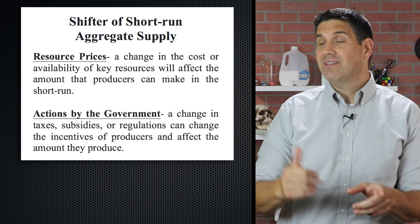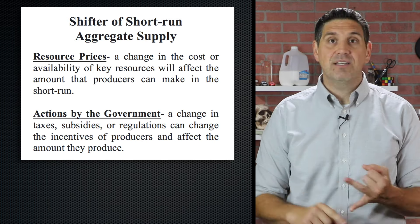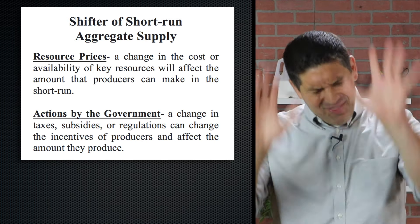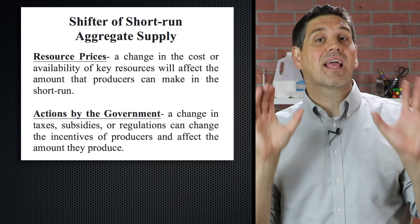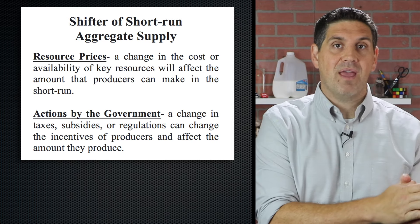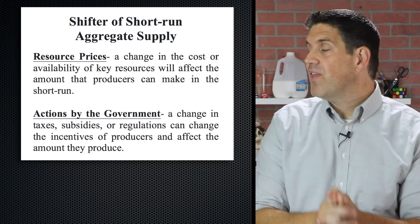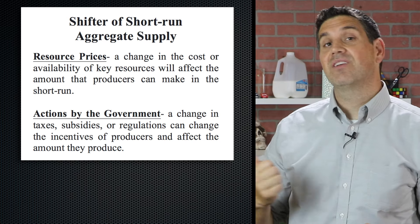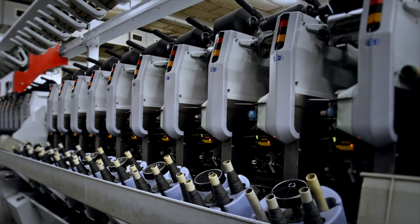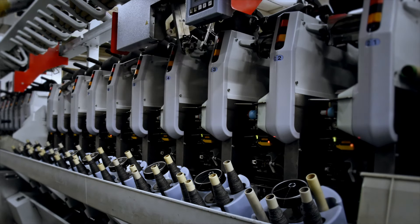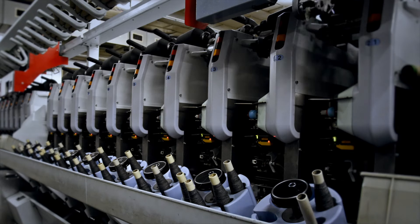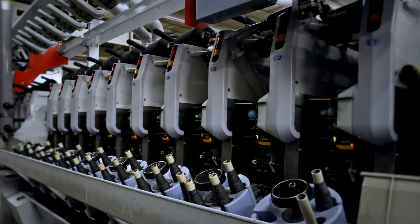Another shifter is actions by the government — taxes, subsidies, or regulation — but this is not government spending. Remember, government spending is a shifter of aggregate demand; we're talking about things that are affecting supply. The last shifter is a change in productivity. For example, a change in technology allows us to use our resources better, so we get more output for each input.